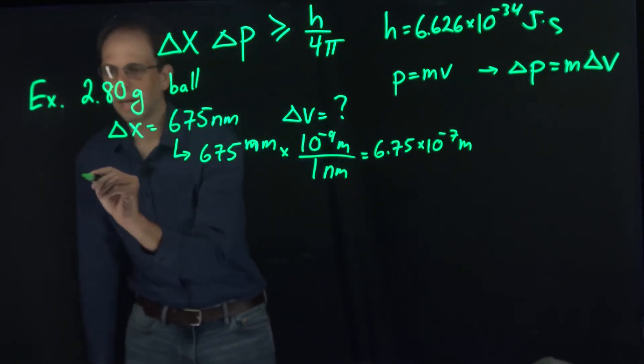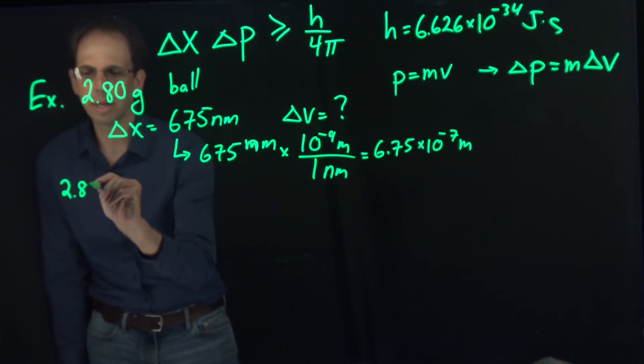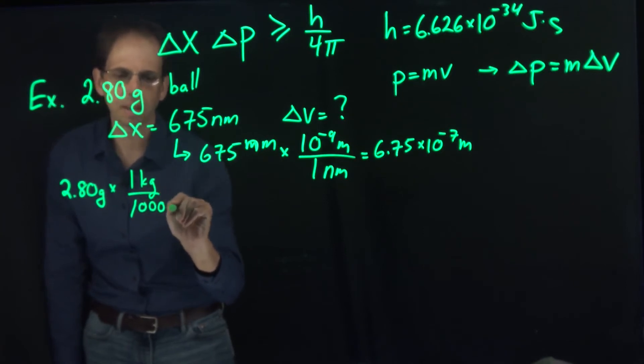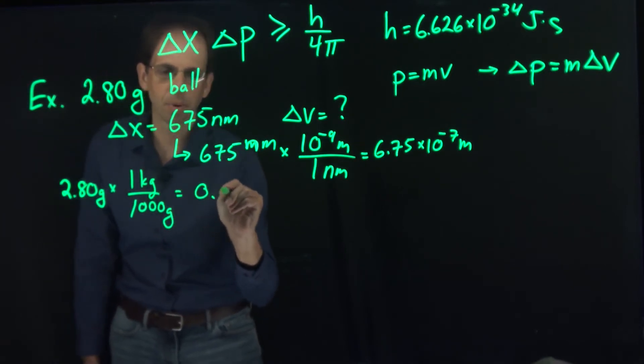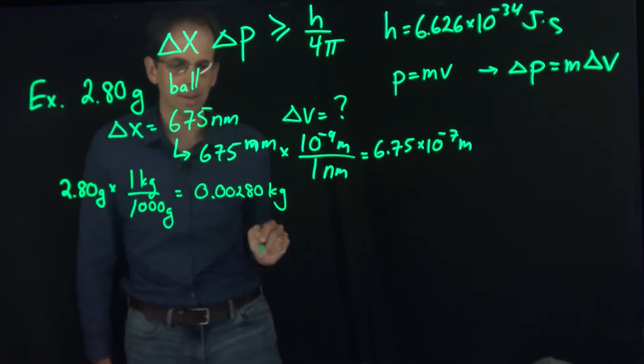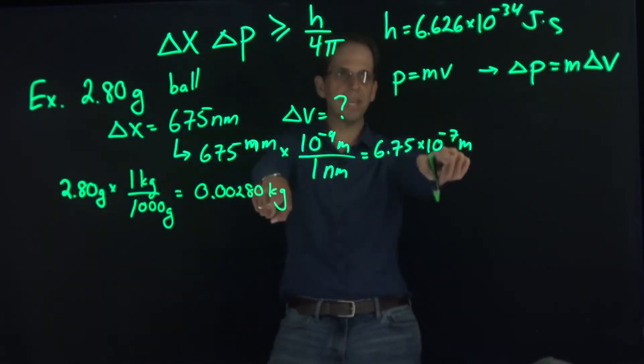For my 2.8-gram ball, I have 2.80 grams times 1 kilogram per 1,000 grams, and so I get 0.00280 kilograms. So now I have these in SI units.